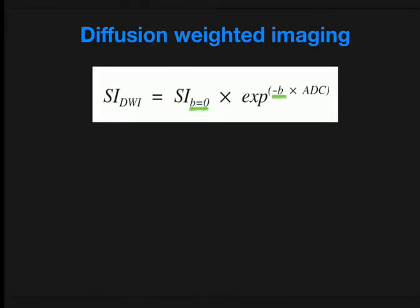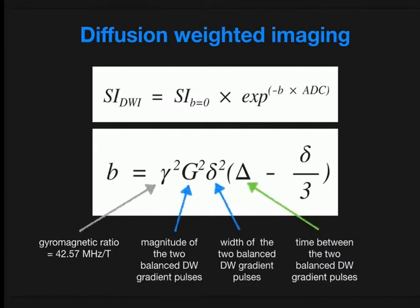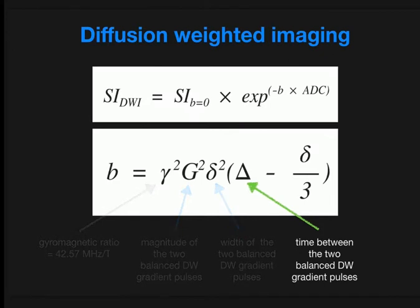Another term causing great confusion is the B value. It appears twice in the equation — once as B0 and once within the exponential component. B is made up of a number of terms including a gyromagnetic ratio fixed by magnet strength, and some sequence parameters. The one most useful for conceptualizing what happens when you change B value is the time between your gradient pulses — in other words, how long you wait between the start of the sequence and reading out the echo, having given enough time for water molecules to diffuse through the tissue.